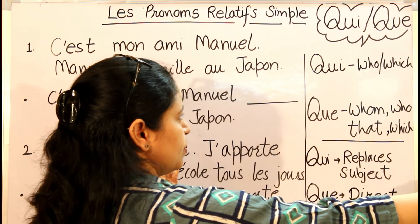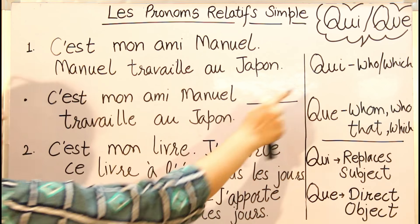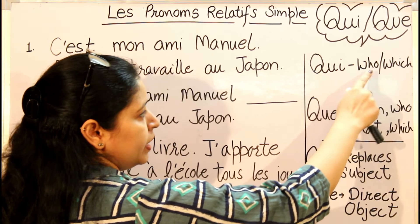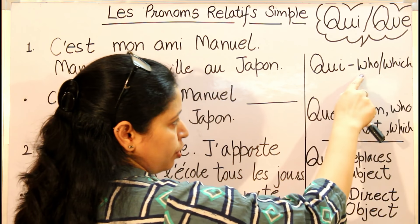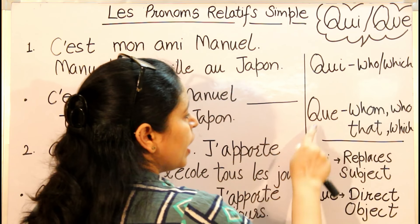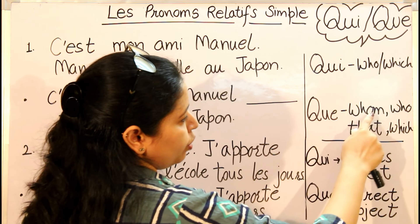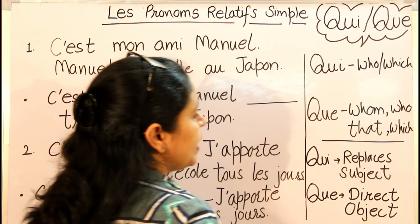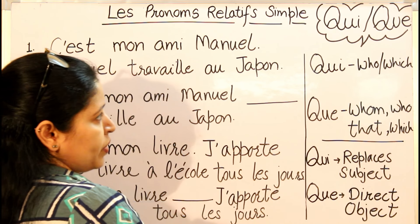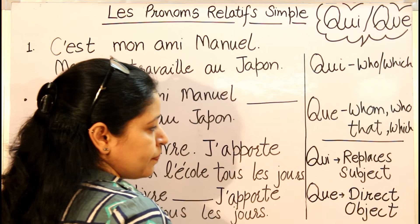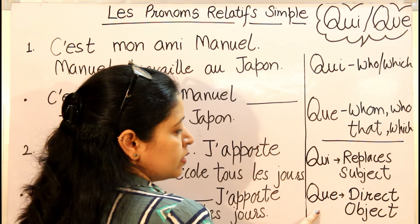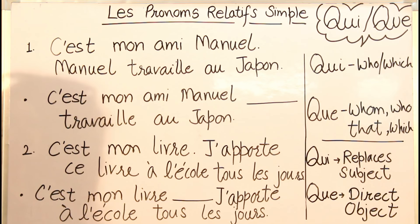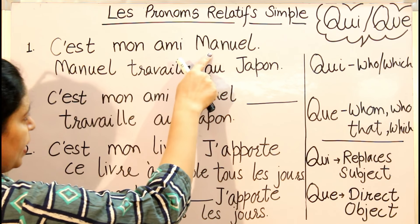QUI means 'who' and 'which' — for a person it gives the sense of 'who', and for things 'which'. QUE for a person gives the sense of 'whom' or 'who', and for things 'that' or 'which'. These two pronouns replace different elements: QUI replaces subjects and QUE replaces direct objects.